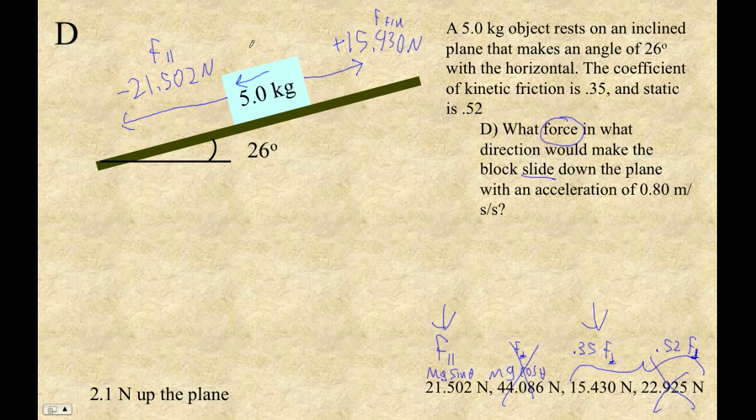And then there's some unknown force here. I'll go force, mystery force. Our forces are negative 21.502, the parallel force, plus 15.430, the friction force. Since it's sliding down the plane, the friction force would actually be up the plane. And then there's some unknown force.